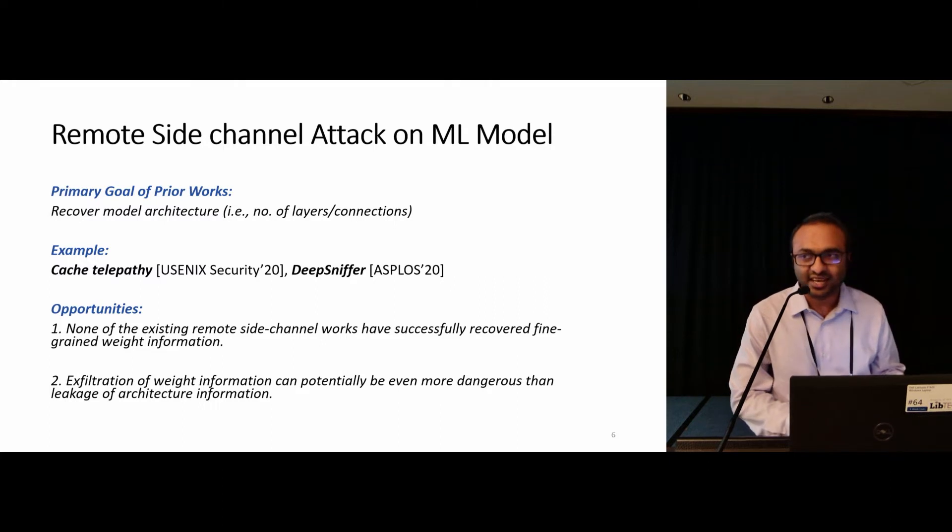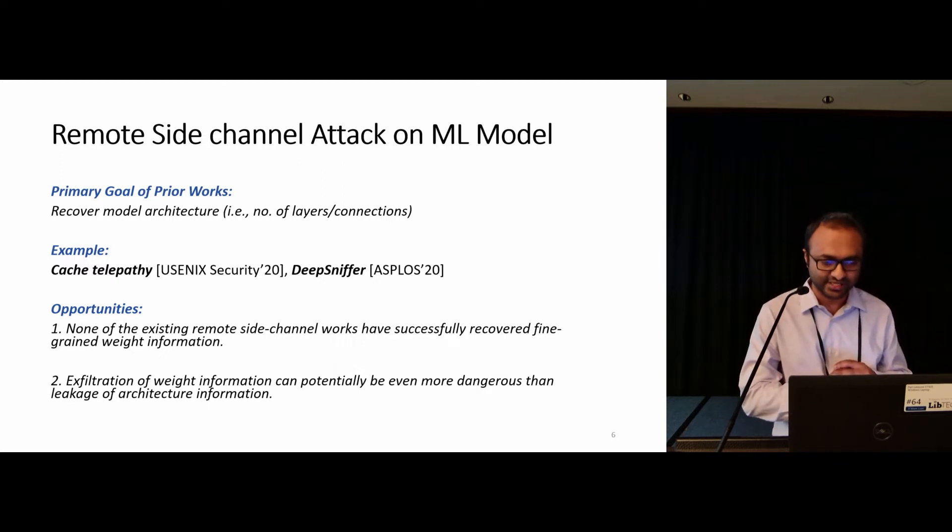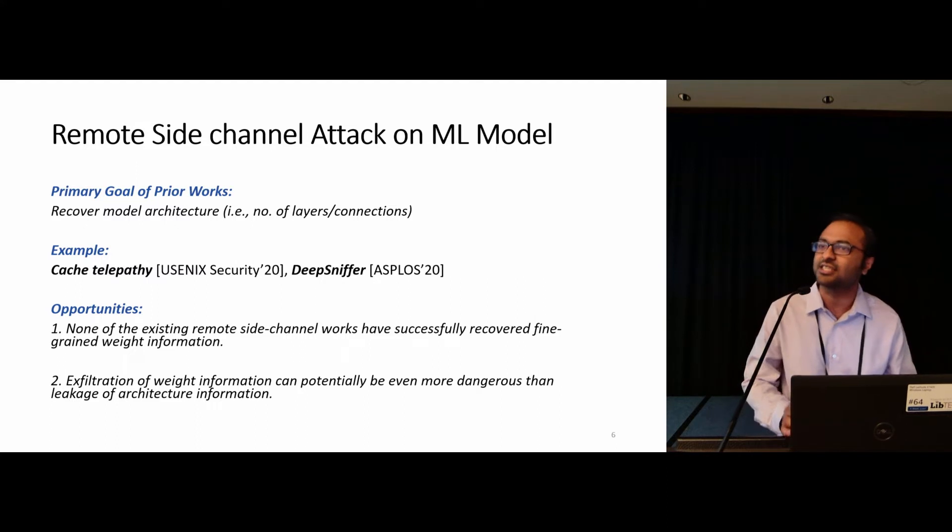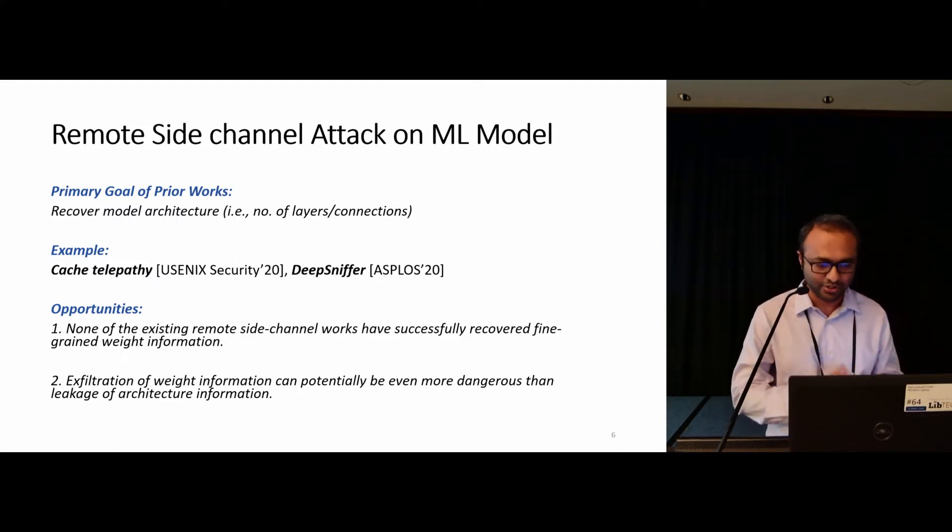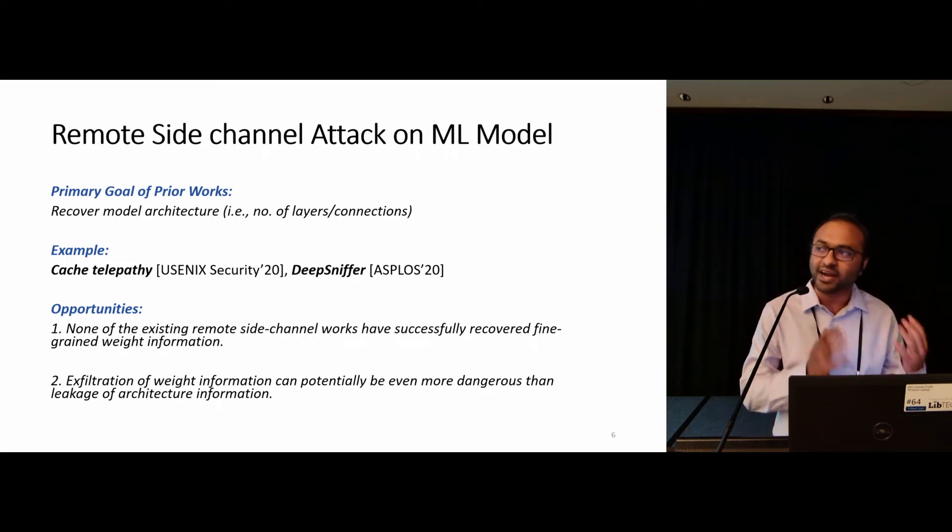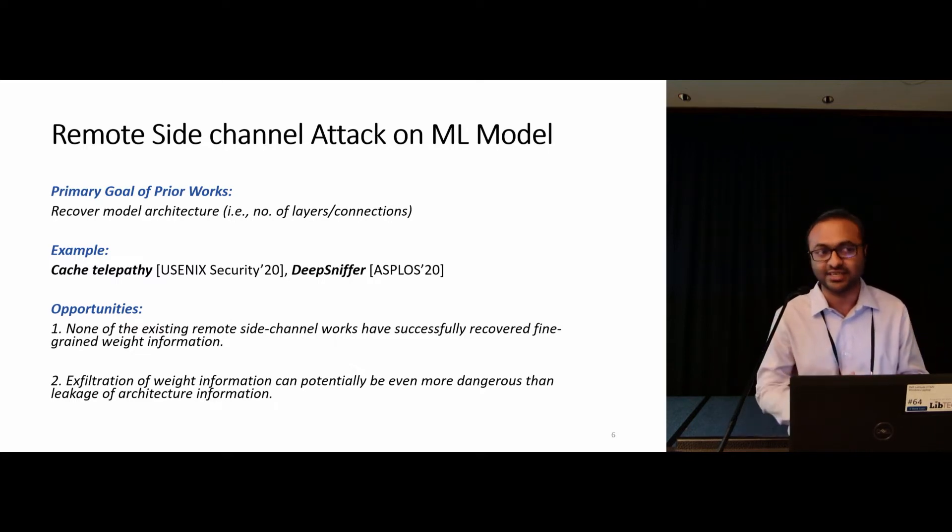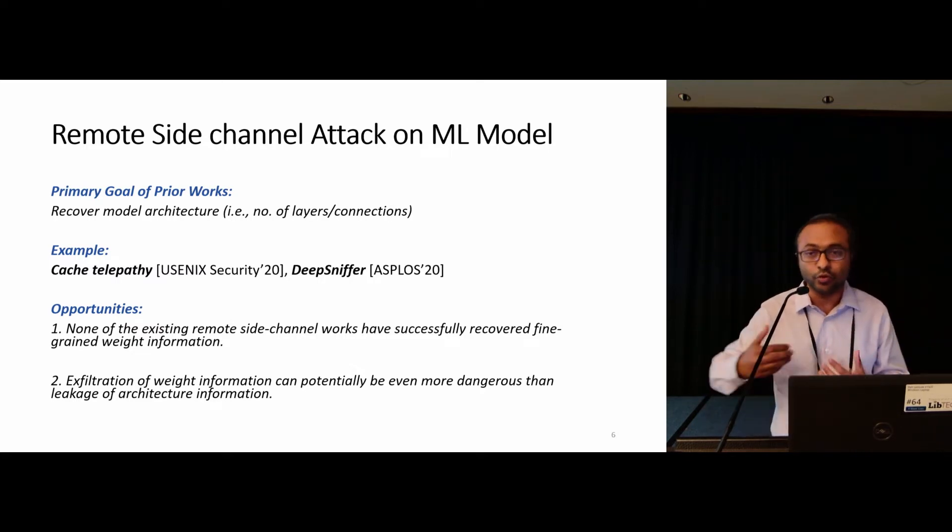In a tangent line of work, remote side channel attack is also popular in cryptography applications to leak certain key information. Those attacks have also been deployed on ML models as well. In ML models, the focus of those attacks were to recover the architecture information, such as number of layers, number of connections. This gives us two real opportunities. The first one is, none of the existing side channel attacks actually successfully recovered the fine-grained weight information. The second one is, exfiltration of weight information can potentially be even more dangerous than architecture-only recovery, because that makes the attack more towards the white box.